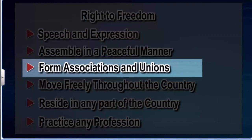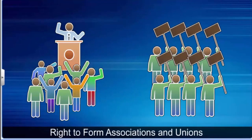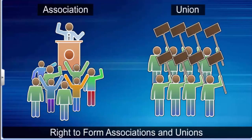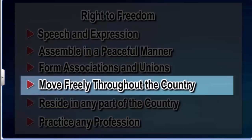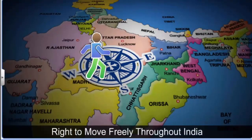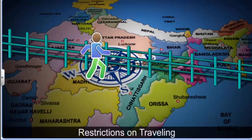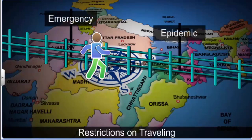The right to form associations and unions grants all citizens of India the freedom to form or be part of an association or union, such as a workers union or a campaign association against pollution. All citizens of India have the right to move freely throughout the country. However, in public interest, the government can impose reasonable restrictions on traveling and movement. For example, in situations of an emergency or epidemic, the government may restrict travel.